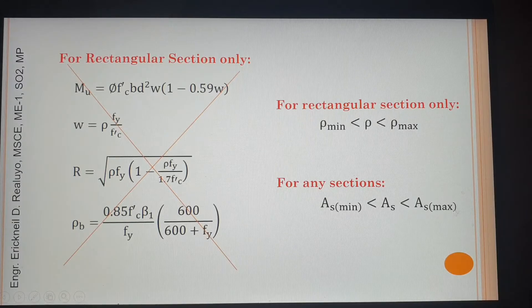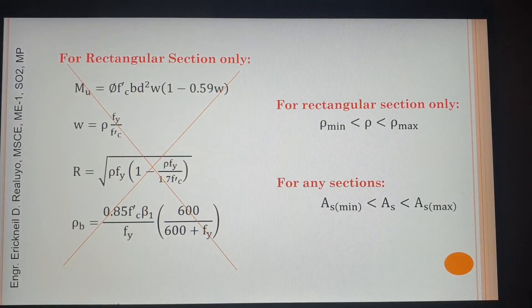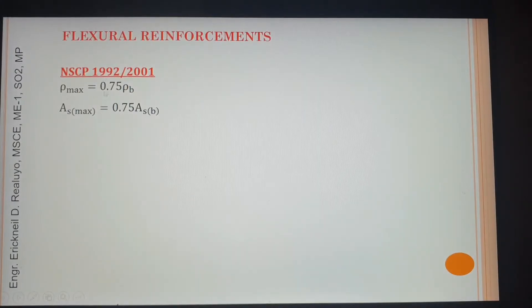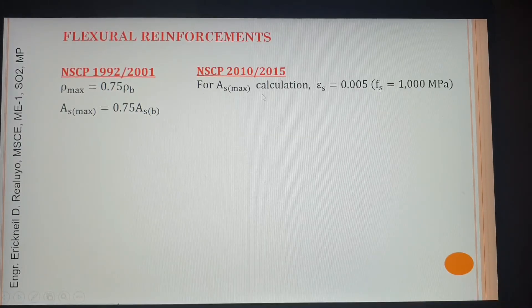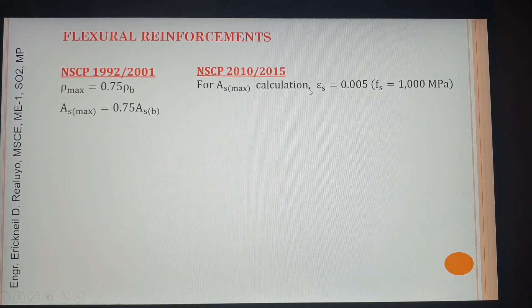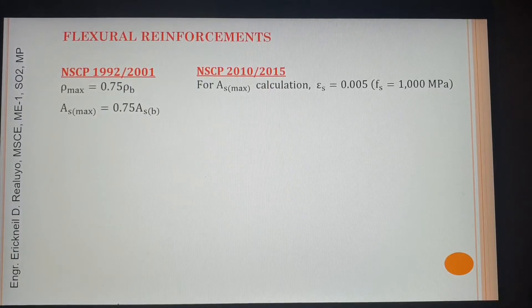What we use is As instead of rho — when you use As, you are using the general approach. In NSCP 2001 as well as 1992, the As_max was given by the old expression. But those are no longer being used. In NSCP 2015 and 2010, for As calculation, the strain of steel is 0.005.